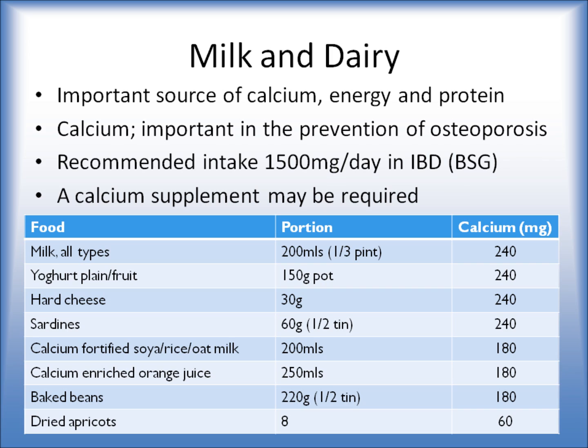Milk and dairy are a great source of calcium, which is really good for your bone health, as well as providing energy and protein. Calcium is important in preventing osteoporosis, a disease where your bones become weaker and start to thin down. The British Society of Gastroenterologists recommends 1,500 micrograms of calcium a day, which is quite a large amount. A glass of milk provides about 240 micrograms, which is a good contribution.